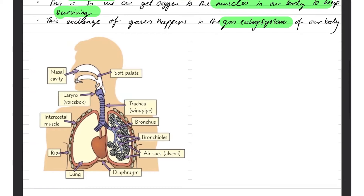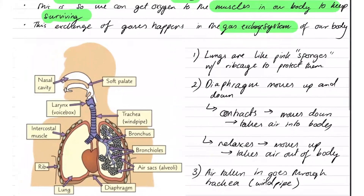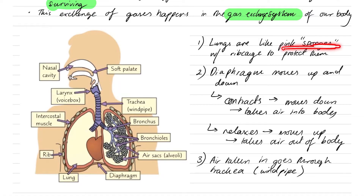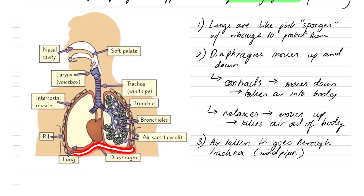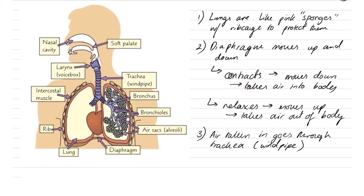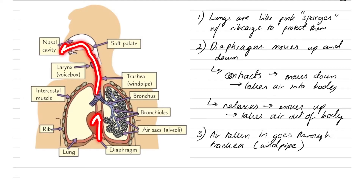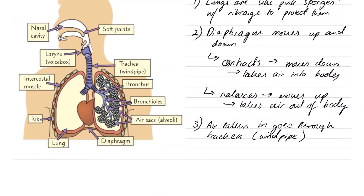The lungs are pink sponges with a rib cage to protect them, and at the bottom there's something called the diaphragm. The diaphragm can move up or move down. When it moves down it contracts — getting tighter — and this pulls air into the body. When it relaxes and moves up, it pushes air out of the body. The air pushed out is CO2, and the air taken in is oxygen, because we breathe in oxygen and breathe out carbon dioxide.